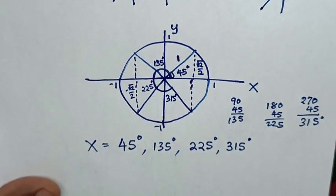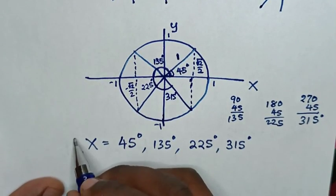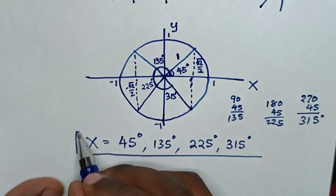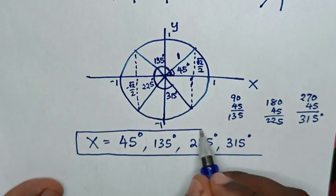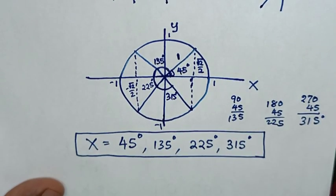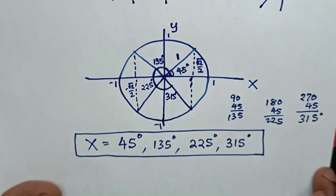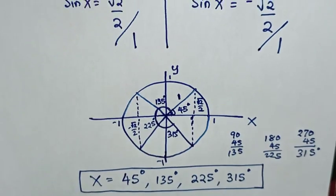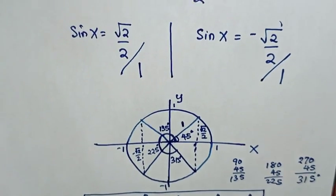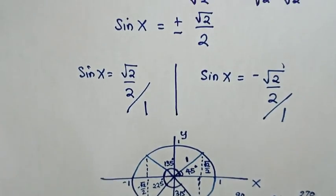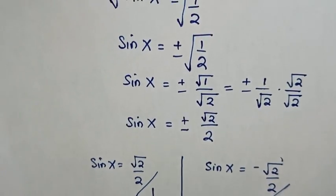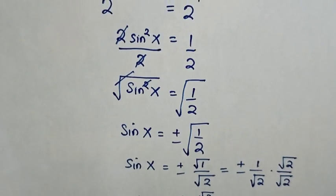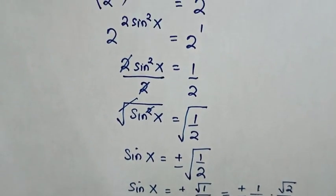Therefore, all values of x between 0 and 360 degrees are 45, 135, 225, and 315 degrees. Thank you for watching. Don't forget to subscribe to my channel and see you in the next video. Bye-bye.